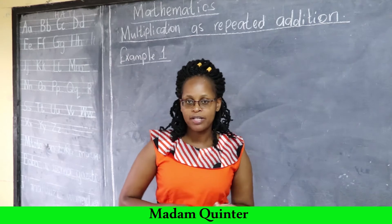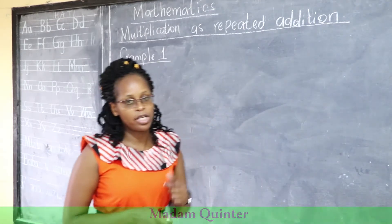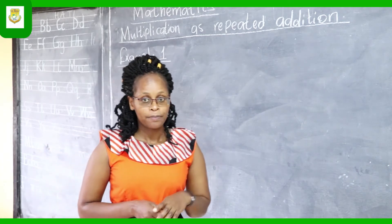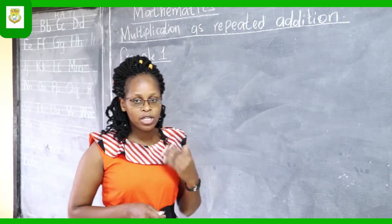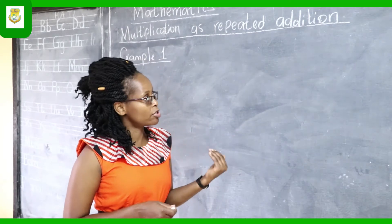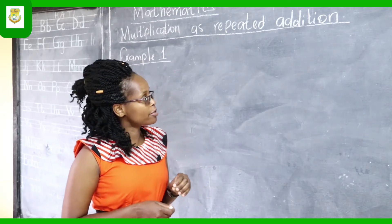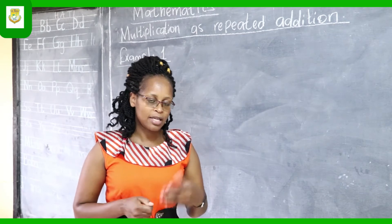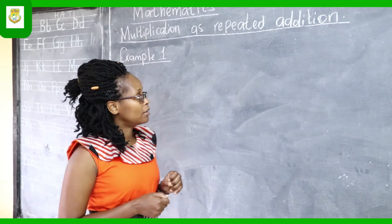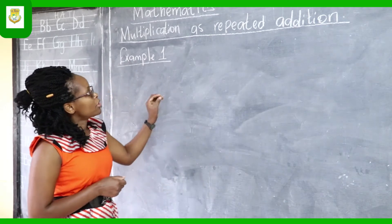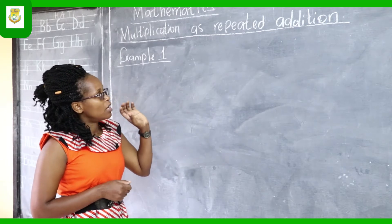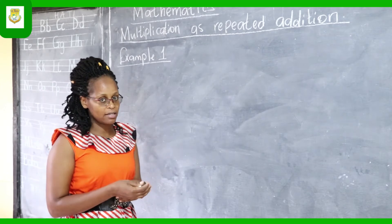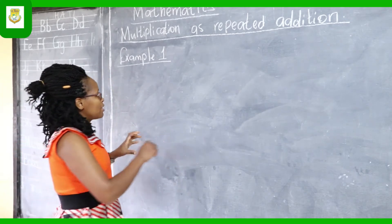Welcome to today's mathematics lesson. The strand is multiplication, and the substrand is addition — multiplication as repeated addition. We have done addition as a strand in grade two, but now we are going to use the same concept to work out multiplication. Addition is simply putting things together, just like we did in grade one and grade two. When we talk about multiplication as repeated addition, we are going to see how multiplication is reflected when objects are added in a series.